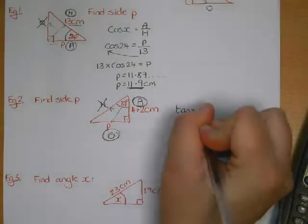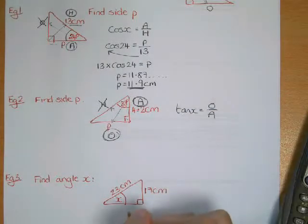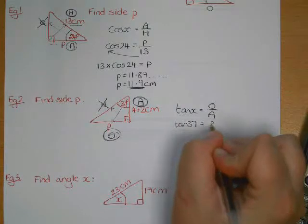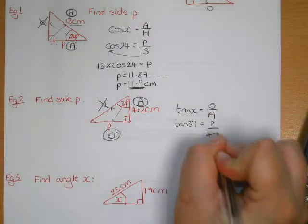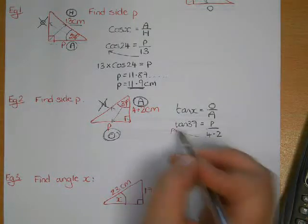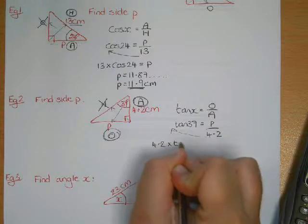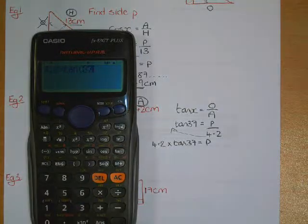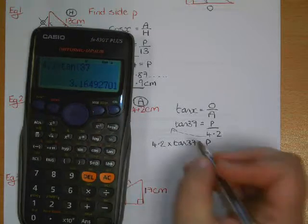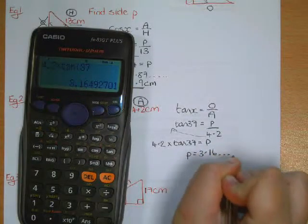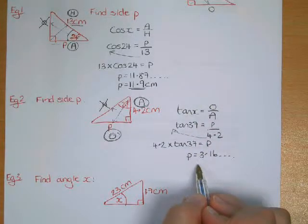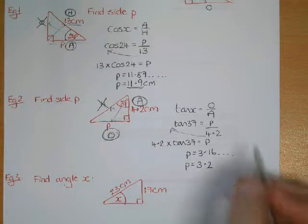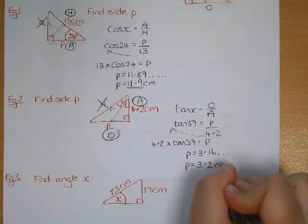Write down tan x equals O over A, then substitute in what you know. X is 37, O is P, and A is 4.2. Rearranging, 4.2 times tan 37 will give us P. Typing that in: 4.2 times tan 37 equals 3.16... So P equals 3.16, and rounding to one decimal place gives 3.2 centimetres.